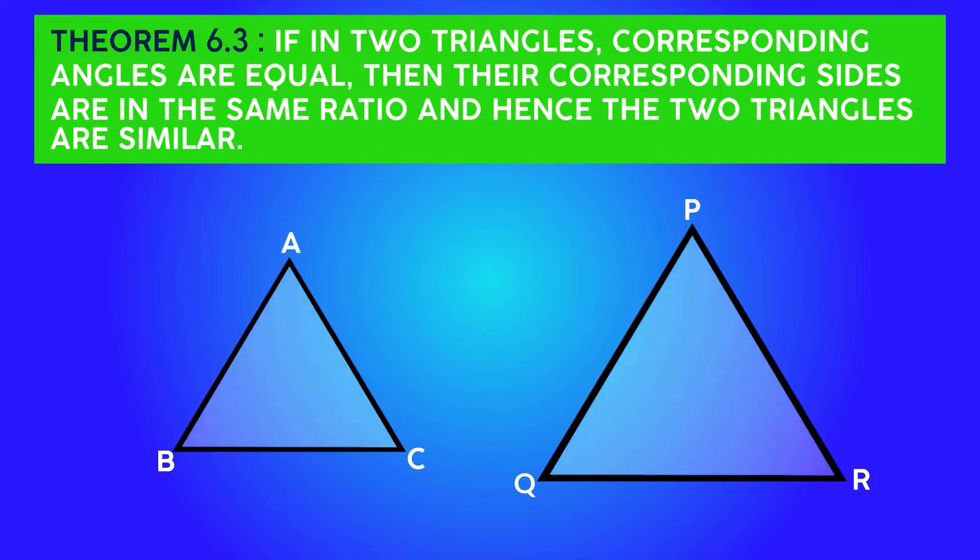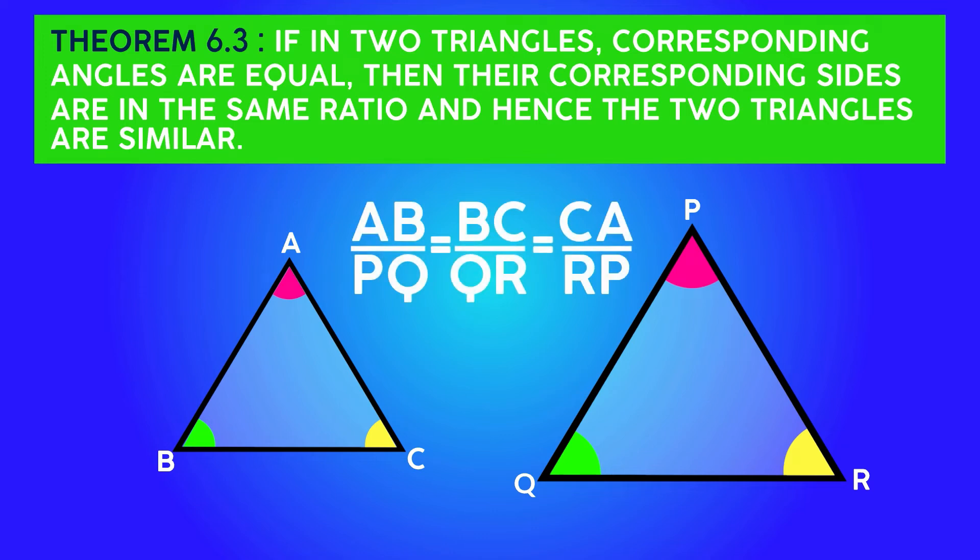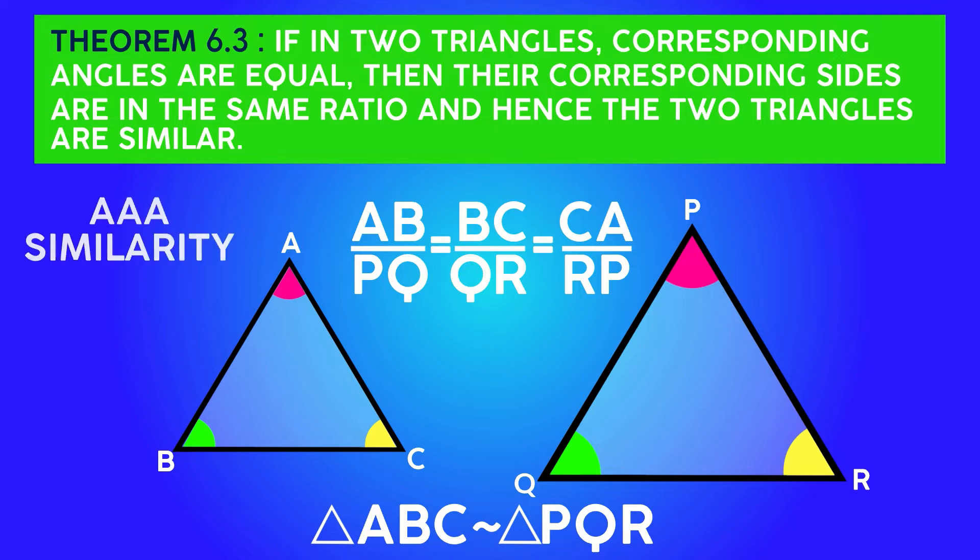Theorem 6.3: If in two triangles the corresponding angles are equal, then the ratio of their corresponding sides is the same and hence the two triangles are similar to each other. This is known as the AAA similarity, angle angle angle, which is also true for two angles.